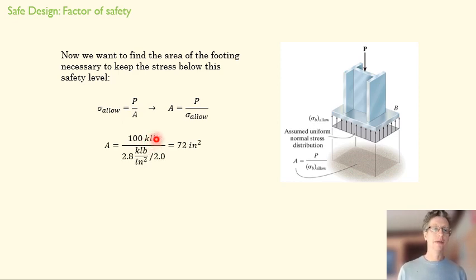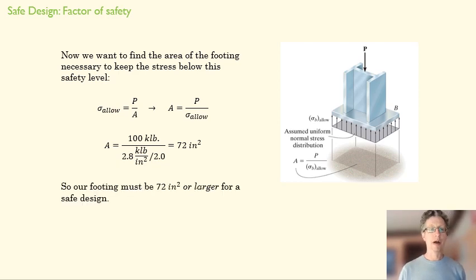We have 100,000 pounds of force here, and a KSI is kilopounds per inches squared. So those kilopounds are going to cancel out here. And we find that we can do a footing of 72 inches squared. Now remember, that's a minimum size. We could make a bigger footing, and our average stress would be lower, and we'd be fine. But we want to make sure that it's at least as big as that.